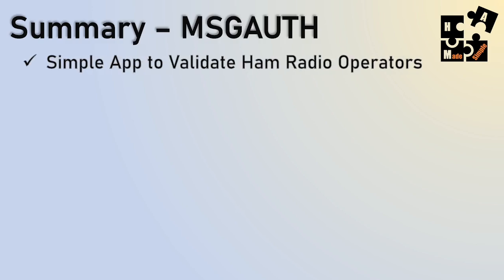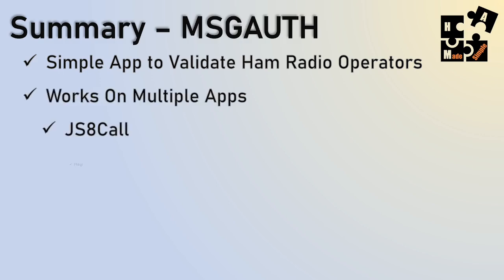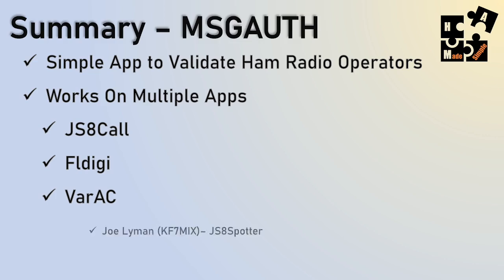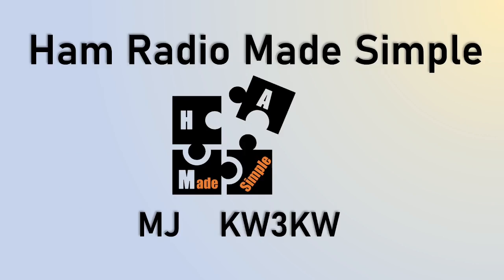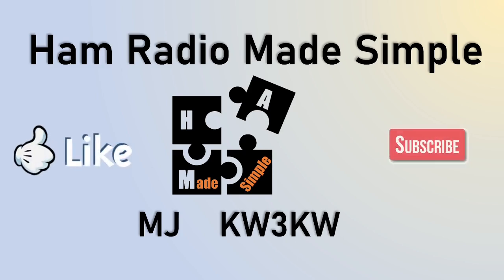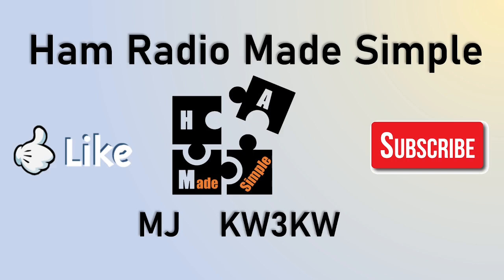Summary: if you want a way of validating ham radio operators on digital apps, this is the way to go. It works on JS8 Call, FL Digi, and VARAC. It's not determined by the app — basically, can you get the message transmitted so someone can put it into the validate section and go back and forth? If you haven't seen his JSA Spotter application, I did a video that's in the link below — it's a must-have companion tool for JS8 Call. This is MJ with Ham Radio Made Simple, call sign KW3KW, thanking you for hitting like, subscribe, and your encouraging comments. Until next time, this is MJ out.